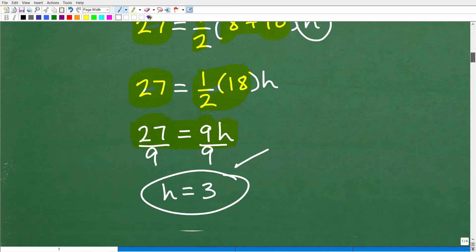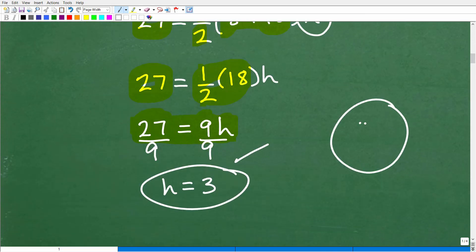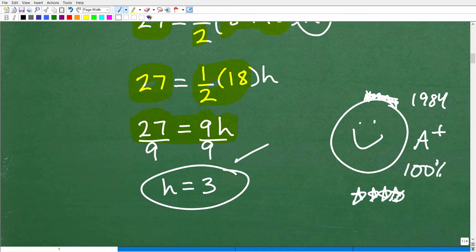If you got that right, then I must go ahead and give you an awesome happy face with a good old 1984 flat top. That's a terrible flat top. Let's kind of fix it up a little bit better. And a 100%. And just to make you feel extra special, I'm going to give you 3 or 4 stars so you'll remember how successful you were all day long with this particular problem. So, nice job. Now, if you didn't get this right, hopefully you learned how to do a problem like this.